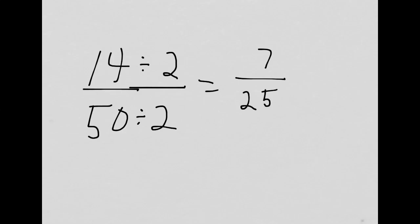7/25 can't be simplified any further. 7 is prime number and 7 is not a factor of 25. The stronger you are with your multiplication facts, the easier recognizing opportunities to simplify will be.